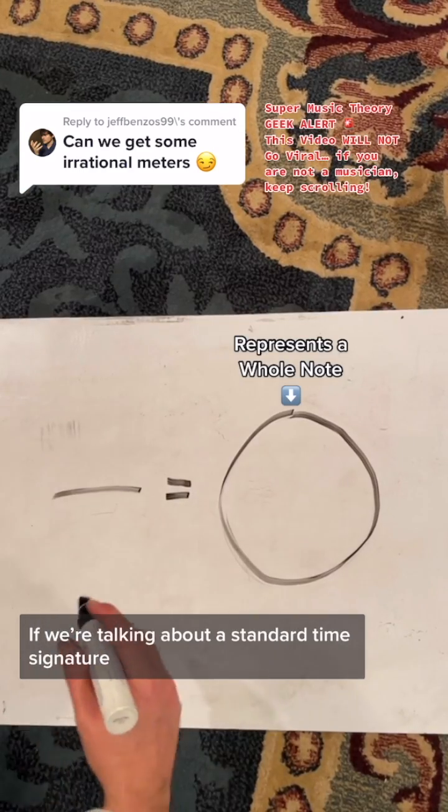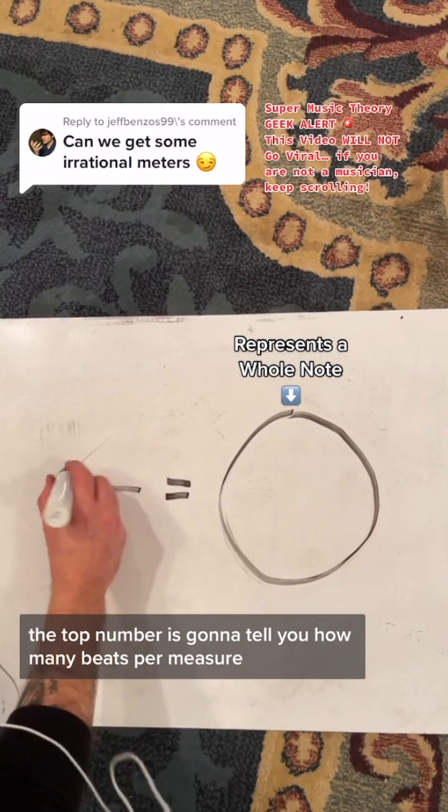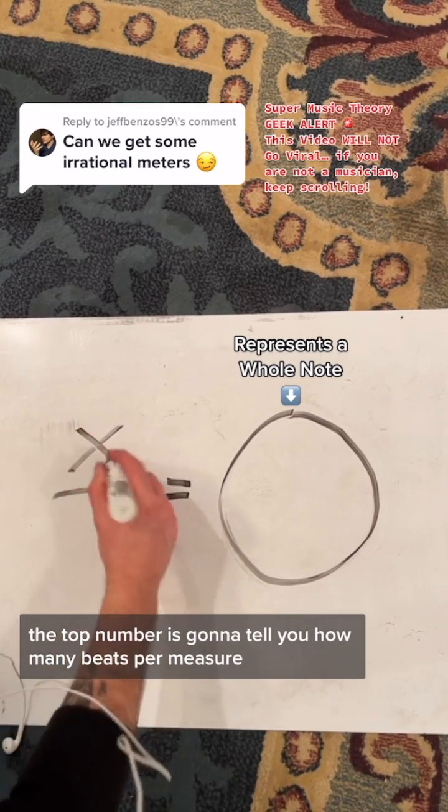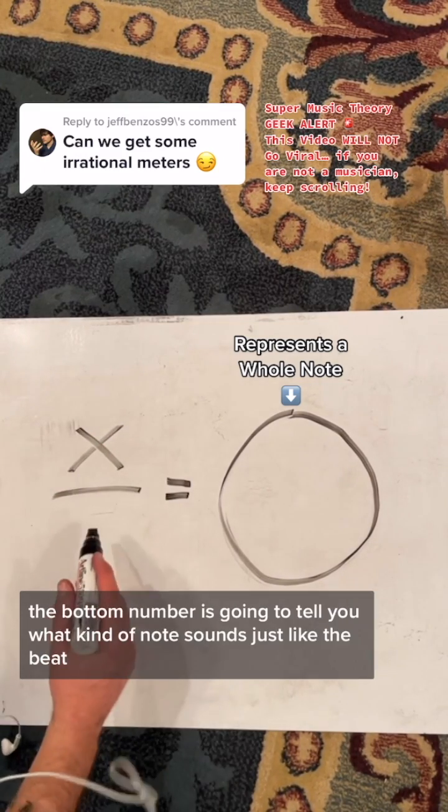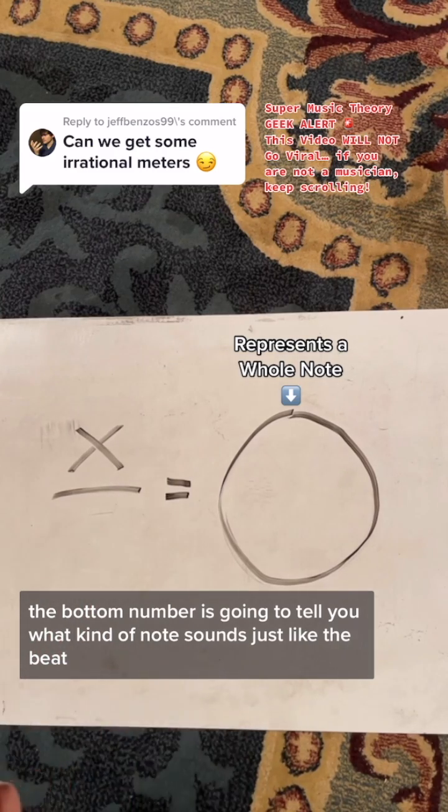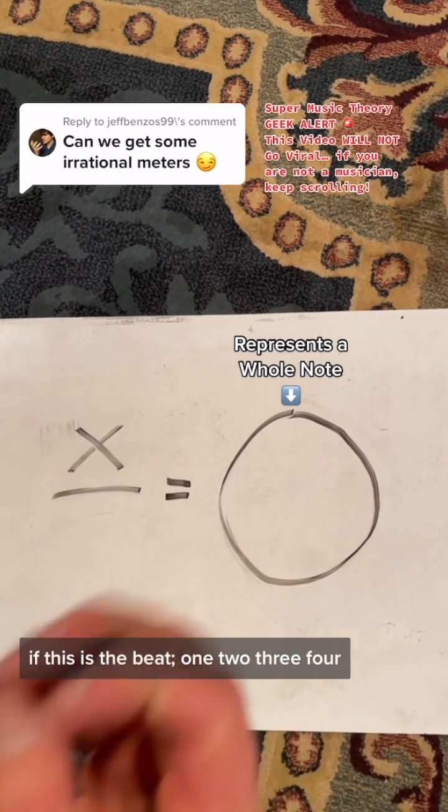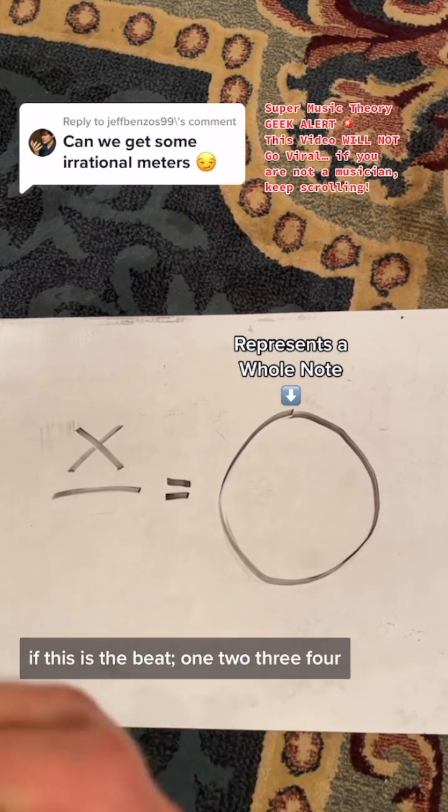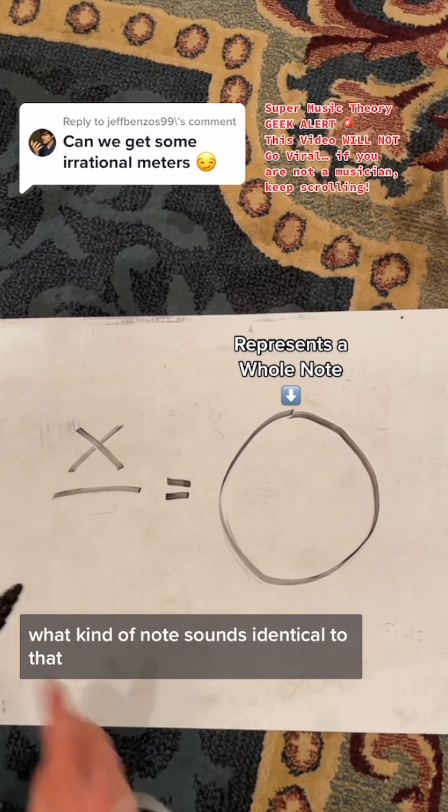If we're talking about a standard time signature, the top number is going to tell you how many beats per measure, and that could be any number. The bottom number is going to tell you what kind of note sounds just like the beat. If this is the beat, one, two, three, four, what kind of note sounds identical to that?